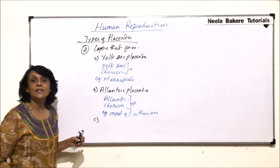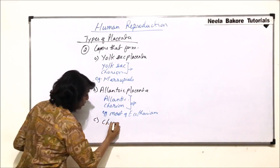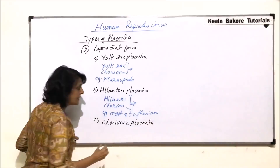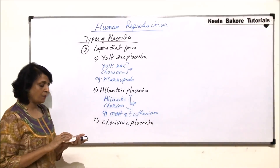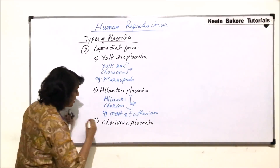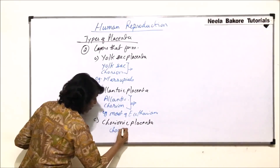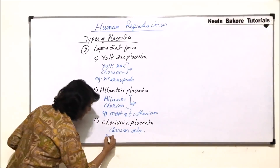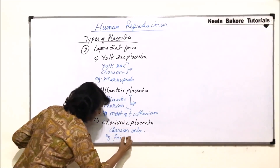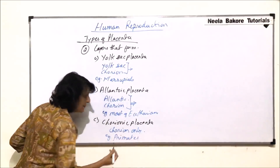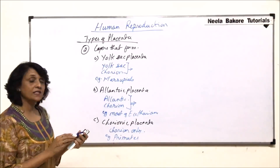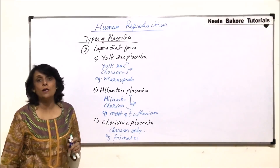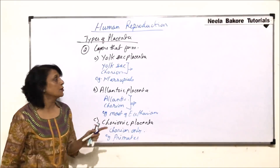The third type of placenta is known as chorionic placenta. As the name tells us, the only membrane participating in placenta formation is chorion alone. This is seen in primates, including human beings — the placenta formed is chorionic, meaning only chorion participates in its formation.